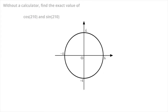As a first example, we're told without a calculator to find the exact value of both cosine of 210 and sine of 210. On the unit circle, starting from the point with coordinates (1, 0), which remember is always the starting point, 210 degrees is found by moving along the circle anticlockwise through 210 degrees.